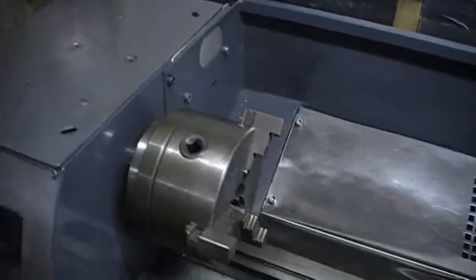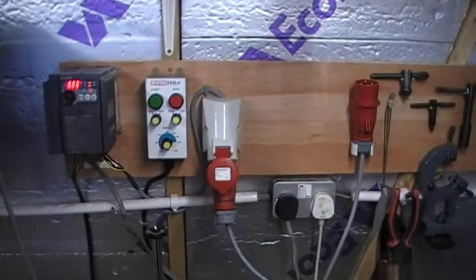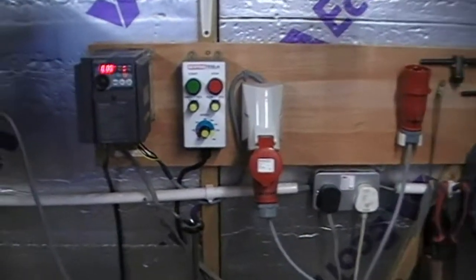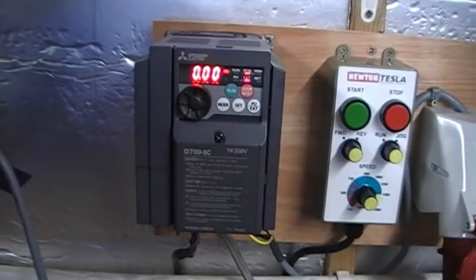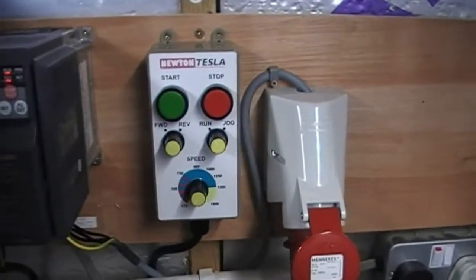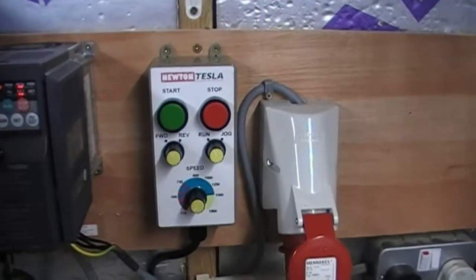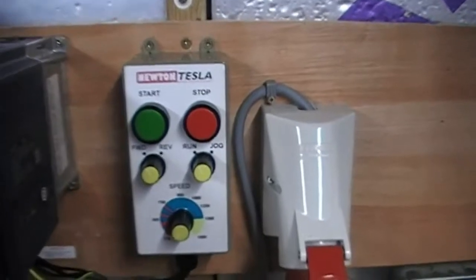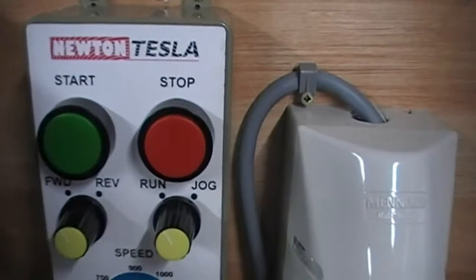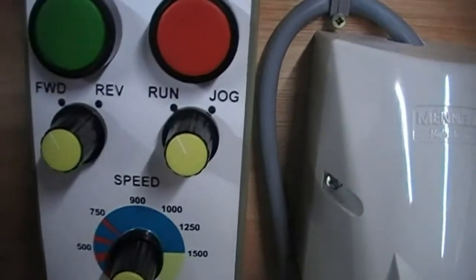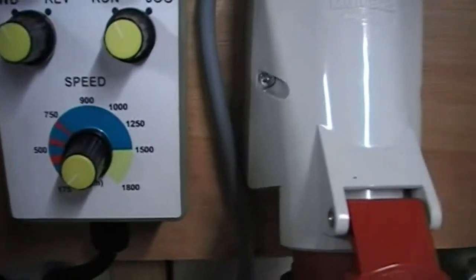Looking at the power supply, we have the inverter. It's a Mitsubishi inverter, quite a good quality one. There's the external speed control station supplied by Newton Tesla. You'll see it's got a standard start and stop button, forward and reverse selector, run and jog selector, and a variable speed control.